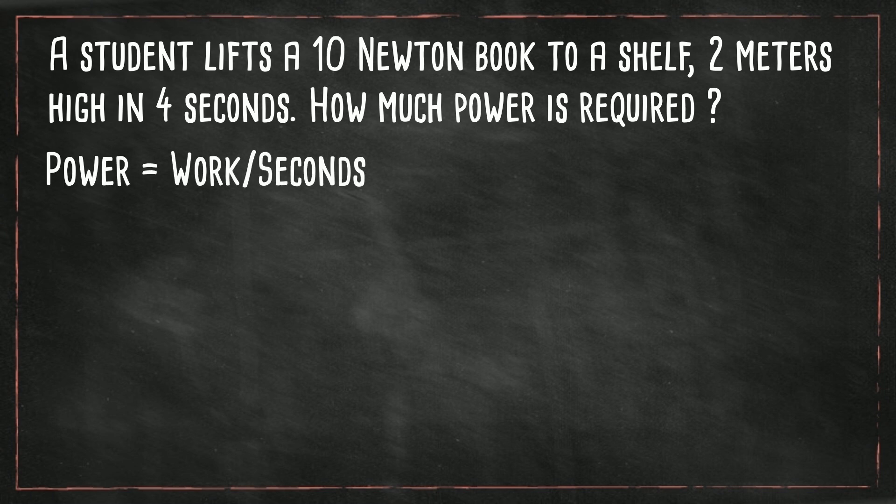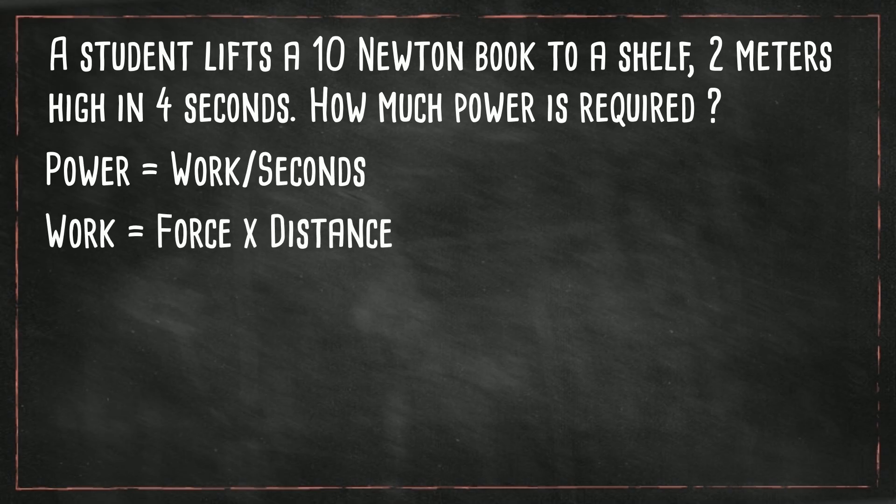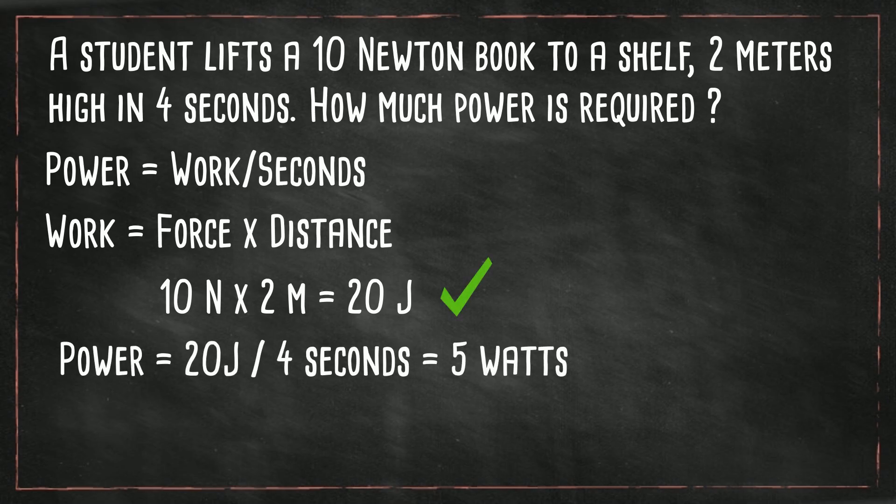Remember power is work divided by time, and work is force times distance. We have 10 Newtons and a distance of two meters. When you multiply this together that gives you 20 joules. So work is 20 joules. Now for power we take the 20 joules and divide it by the time which is four seconds, and that gives us five watts.